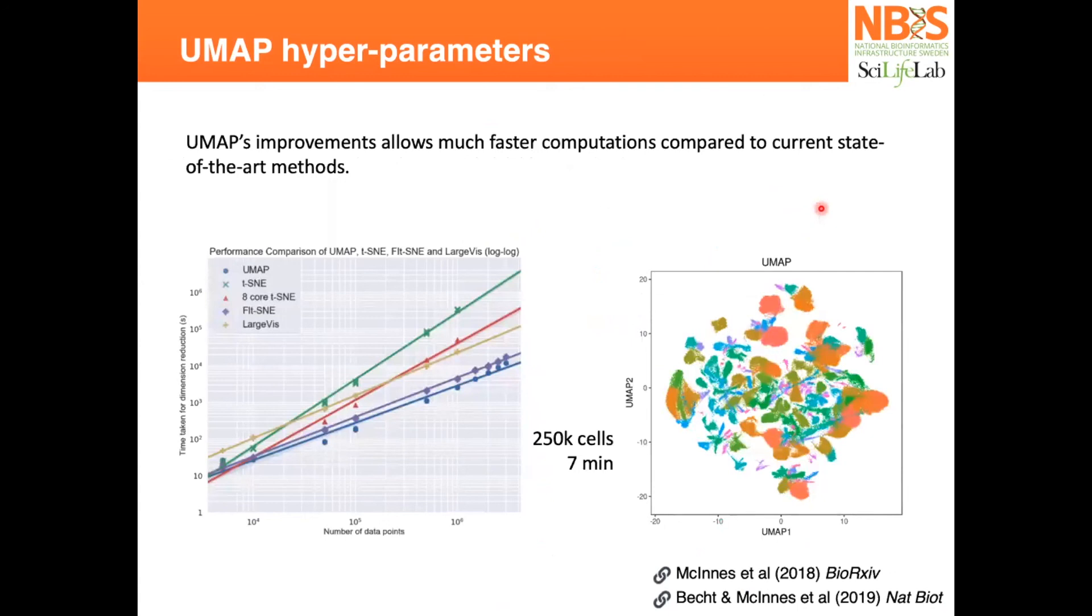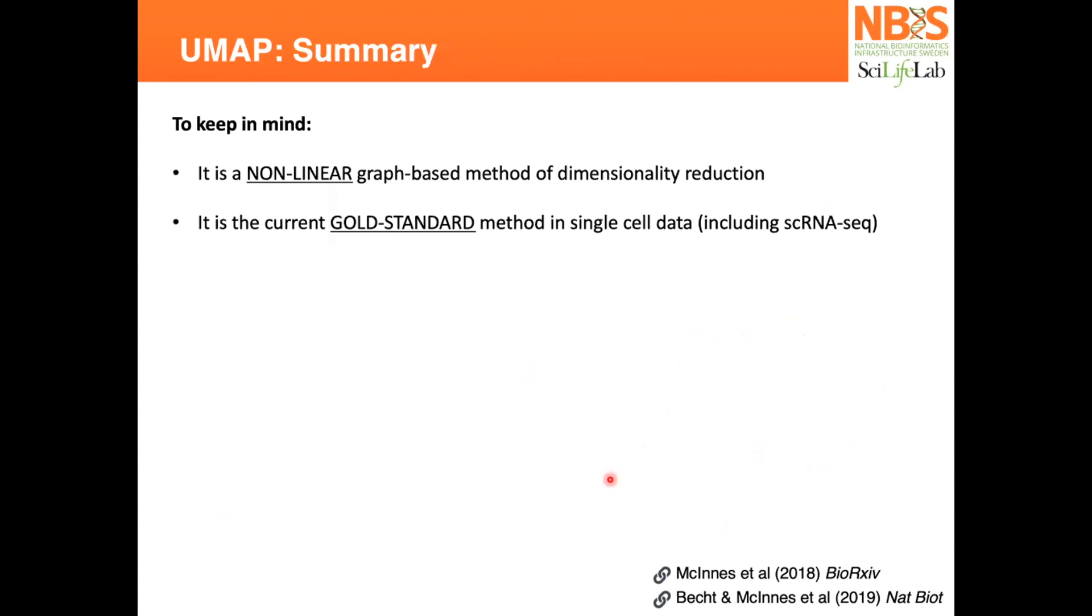UMAP, besides optimizing for measurement of global and local distances, also has higher speed compared to other methods. It's very similar to the Fourier transform t-SNE. Here's an example visualization of UMAP, which is fairly similar to t-SNE.